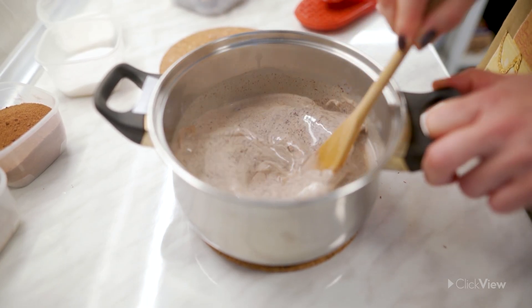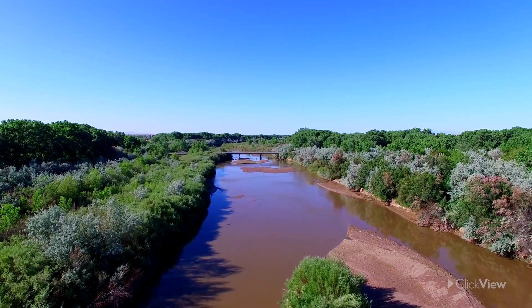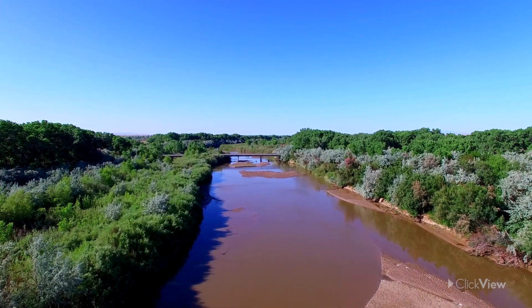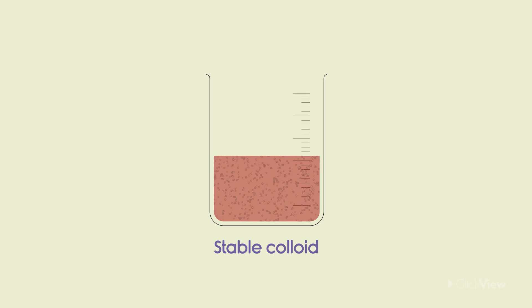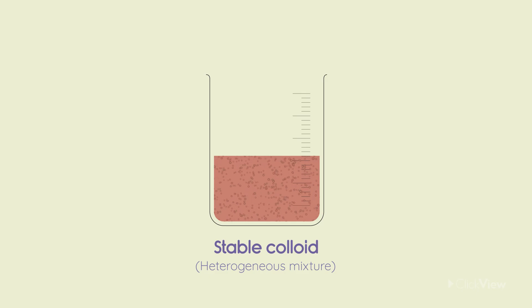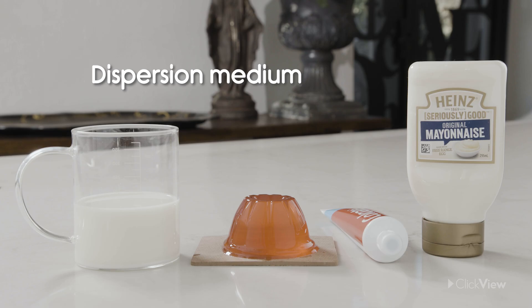Colloids are another type of mixture. Sometimes a river or creek may appear brown in color, and this is often caused by tiny particles of soil, like clay, floating within the water. The particles are too small to drop to the bottom of the water, but not small enough to dissolve in it. So it's a colloid, a type of heterogeneous mixture. In colloids, particles are dispersed through a medium, which is known as the dispersion medium.